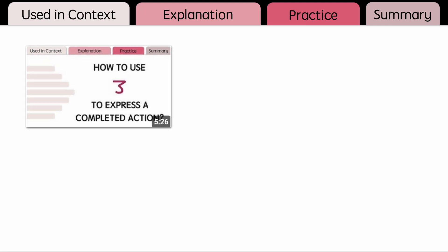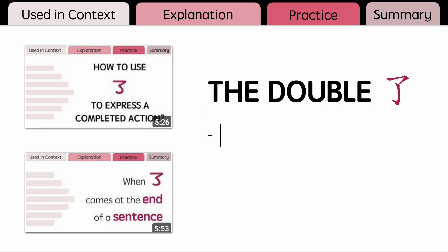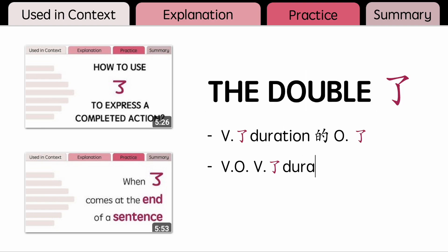In previous videos, we learned two types of 了. One is when it comes after action verbs to indicate completion of the actions. And the other one is when 了 comes at the end of a sentence to indicate new information the speaker wants to prompt. In this video, we'll look at when these two types of 了 appear together in a sentence.